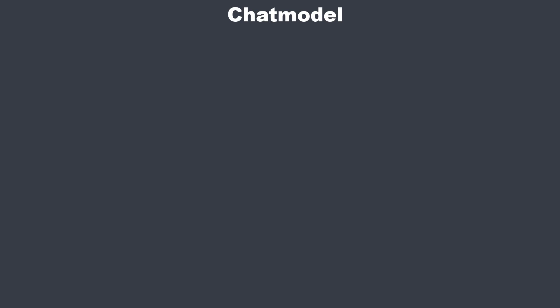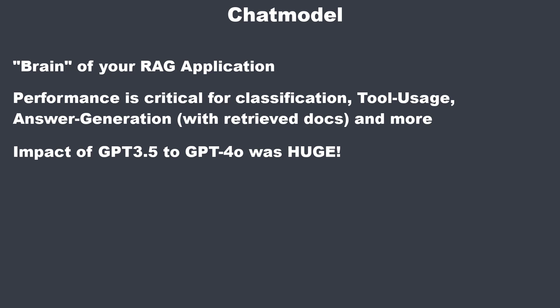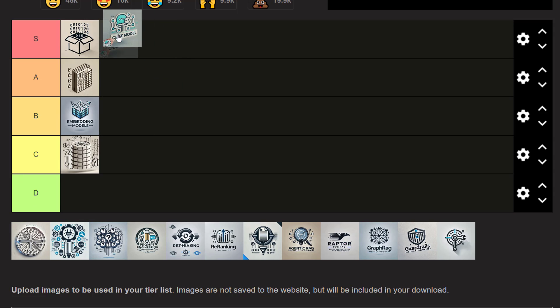The next topic is the chat model — the core engine that generates responses. Its performance is critical: it needs to understand the query and integrate retrieved information to deliver coherent, contextually appropriate replies. If you compare older open source models against state-of-the-art models like GPT-4o, the influence is massive. They write better answers, understand prompts better, and are better at extracting entities. Switching to a more capable model improves the chatbot a lot. Chat model is absolute S tier.